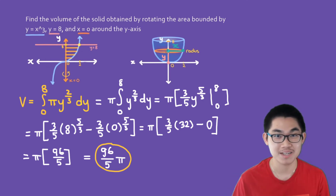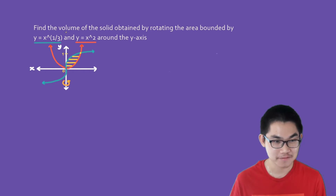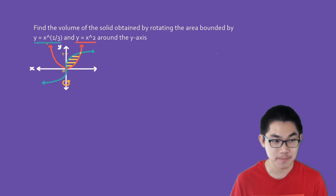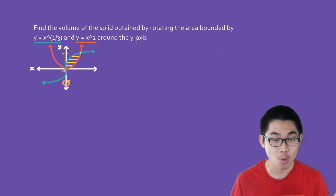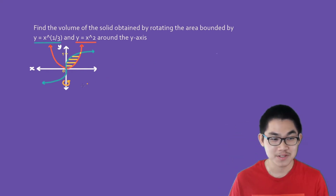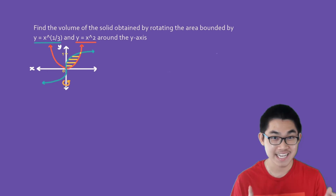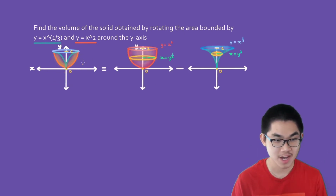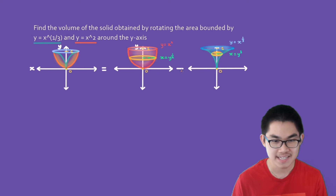Let's go ahead and do the next problem. Find the volume of the solid obtained by rotating the area between y equals x to the power of 1/3 — that's the green curve — and y equals x squared, which is the red function, around the y-axis. If you take the area between these two curves and rotate it around the y-axis, you get a three-dimensional object like this. The volume of this solid equals the volume of the outside function (y = x²) minus the volume of the inner function (y = x^(1/3)).